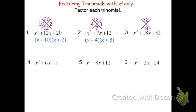For problem 3, we're looking for factors of 32 that add to be 18. I know that 16 times 2 is 32, and 16 plus 2 is 18. Therefore, the factored form is the quantity x plus 16 times the quantity x plus 2. For number 4, we need factors that multiply to be 5 and add to be 6. There's only one way to make 5 using whole numbers: 5 times 1. And conveniently, 5 plus 1 is 6. The factored form is the quantity x plus 5 times the quantity x plus 1.